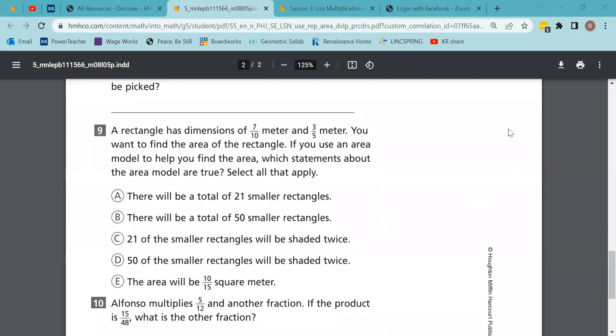A rectangle has dimensions of seven-tenths of a meter and three-fifths of a meter. You want to find the area of the rectangle. If you use an area model to help you, which statements are true? For this type of problem, I like to just do my multiplying. Seven times three is 21, 10 times five is 50, so it's 21 out of 50.